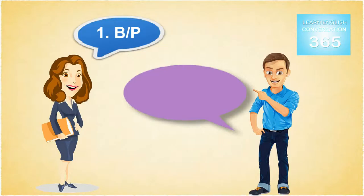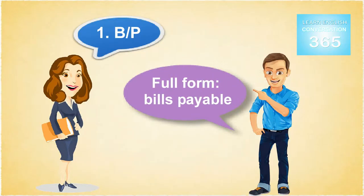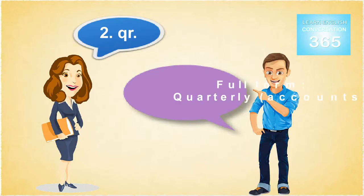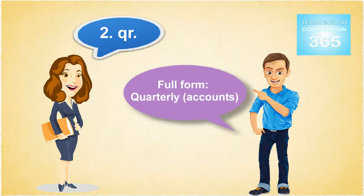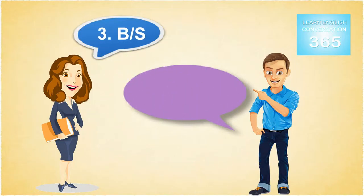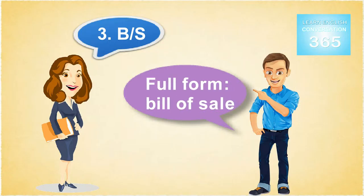1. BP — Full Form. 2. QR — Full Form: Quarterly. 3. BS — Full Form: Bill of Sale.